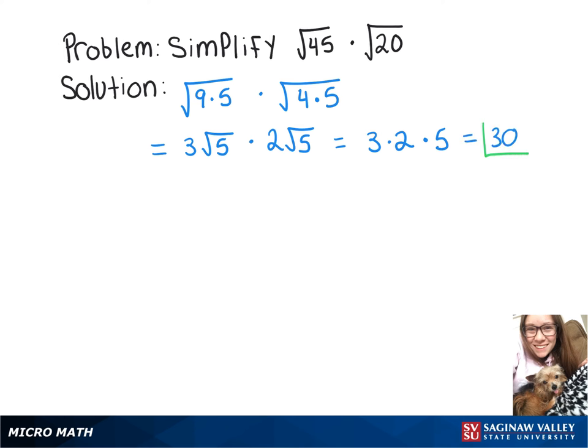So like I said, there are two different ways to think about this. The other way is to do 45 times 20 inside the square root.